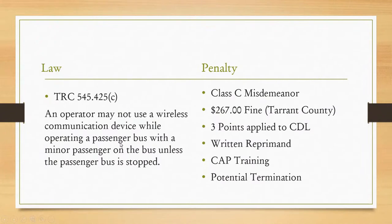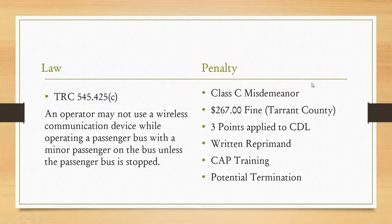Our school buses do have video cameras, and there's a good chance that somebody on your bus is watching you and wanting to find something to get attention about. The Texas Transportation Code says an operator may not use a wireless communications device while operating a passenger bus with a minor passenger on the bus unless the passenger bus is stopped. If you do need to use your cell phone, be sure to pull over, pull the emergency brake, put it in neutral, and turn on your four-way hazards. Don't check the time while the bus is moving — that is a potential Class C misdemeanor with a fine of up to $267 in Tarrant County and three points applied to your commercial driver's license.